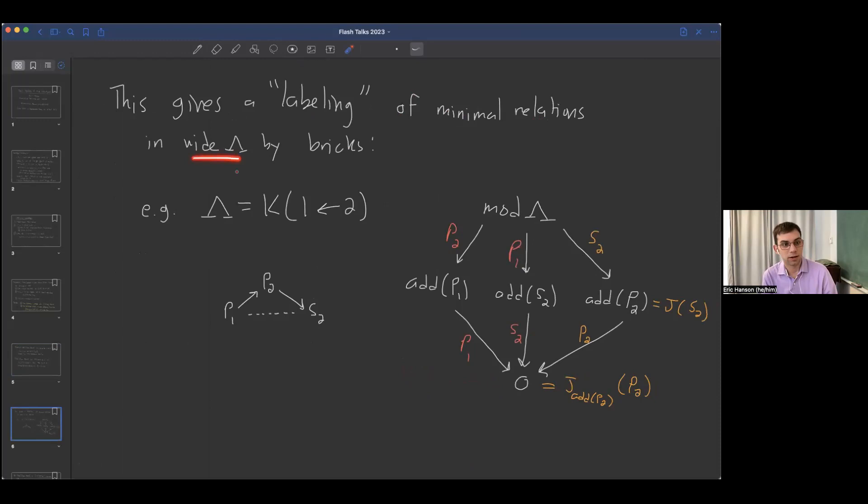The way I want to see this fact is as a way of labeling the minimal relations in this poset of wide subcategories by bricks. Instead of defining what I mean by labeling, I just have an example here. We take A2. Here's my AR quiver. There are five wide subcategories. We can take everything, just direct sums of copies of any one indecomposable, and the zero object. Those are the only wide subcategories.